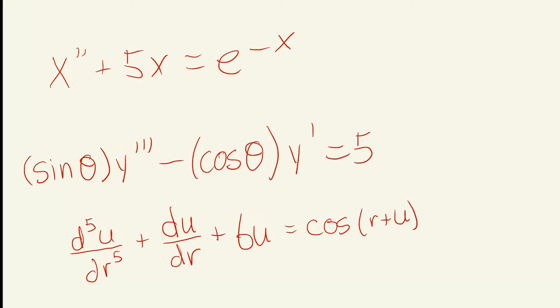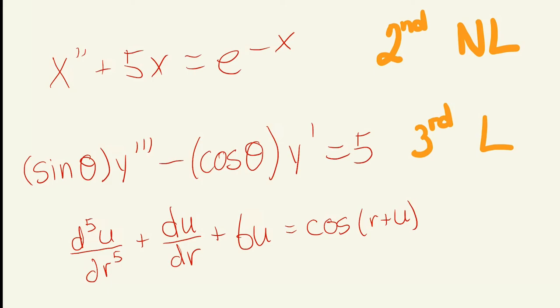Let's do a few more examples. The first example has a highest order of two, and because of the e to the negative x term, this makes it a non-linear function — e to the x is not a line. The next example is third order because that is the highest derivative order, and it is linear since all the coefficients are valid and they're all elevated to one. The bottom example is fifth order, and the cosine of r plus u makes it a non-linear function.